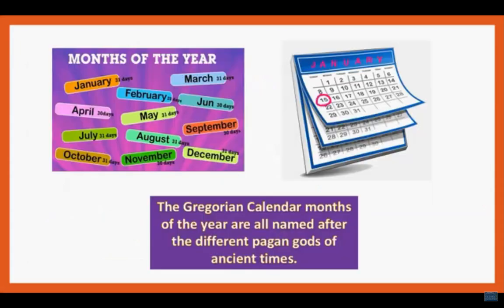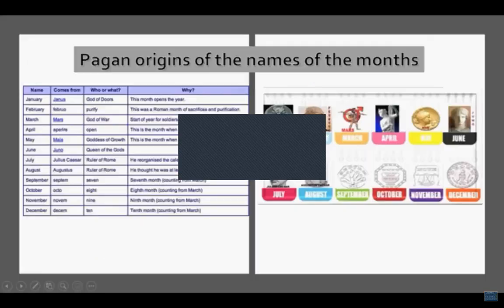The Gregorian calendar months of the year are all named after different pagan gods of ancient times. Maybe we didn't know that when we went to school — they start teaching you these names in first and second grade. But what is their origin? Each month is followed by its pagan name. January is Janus, the god of doors — this month opens the year. February is Februo, named for purity; this is the Roman month of sacrifices and purification.